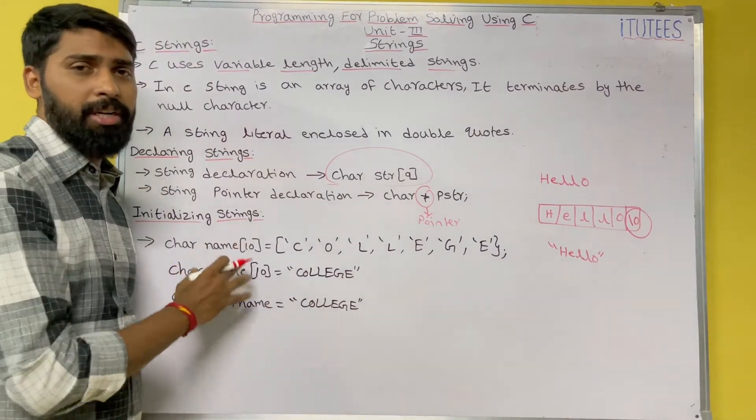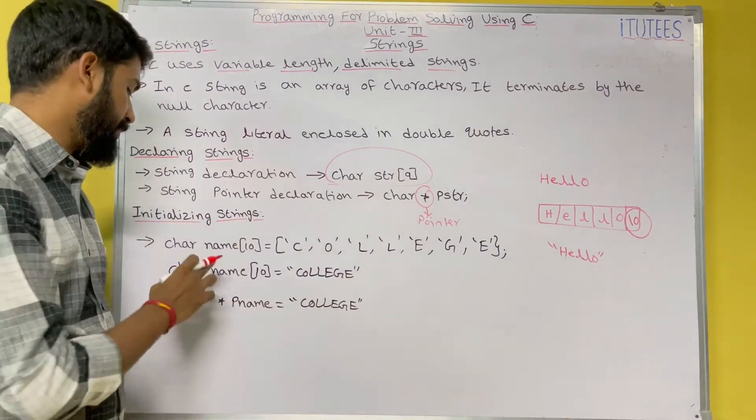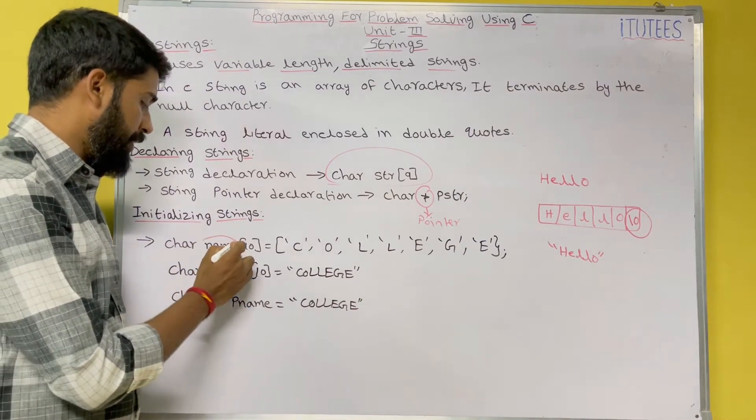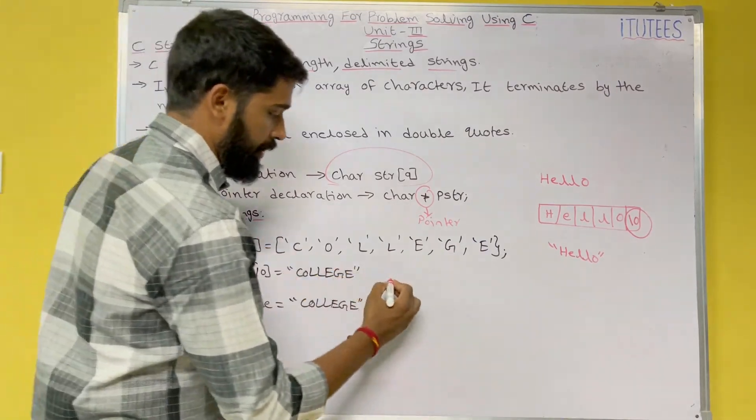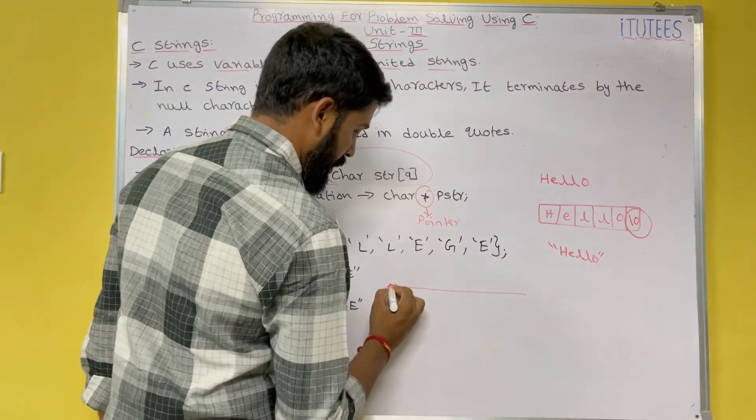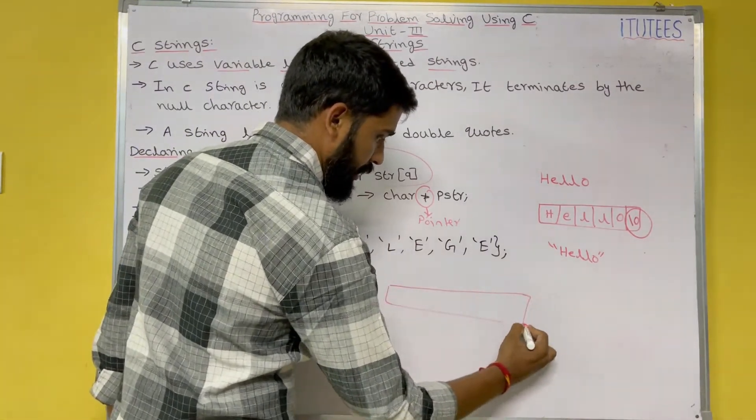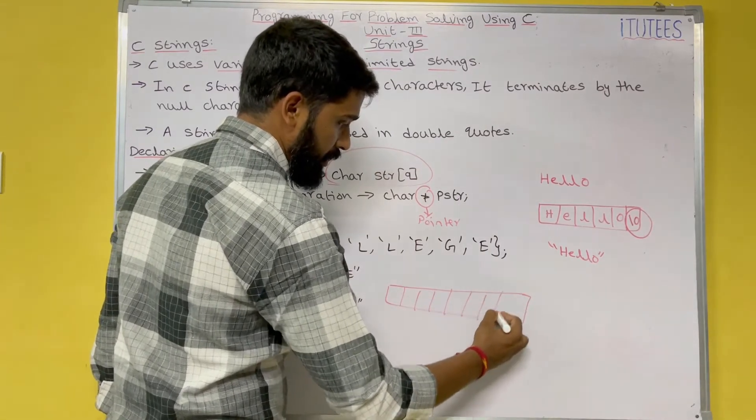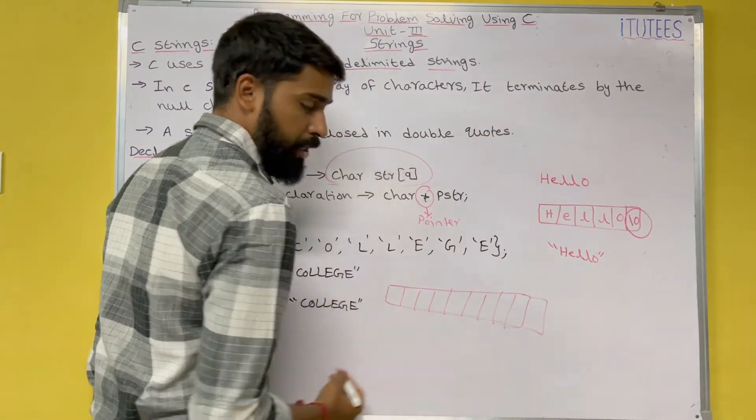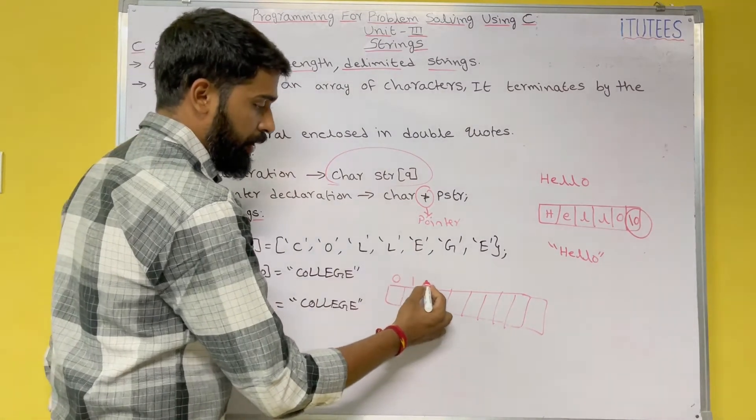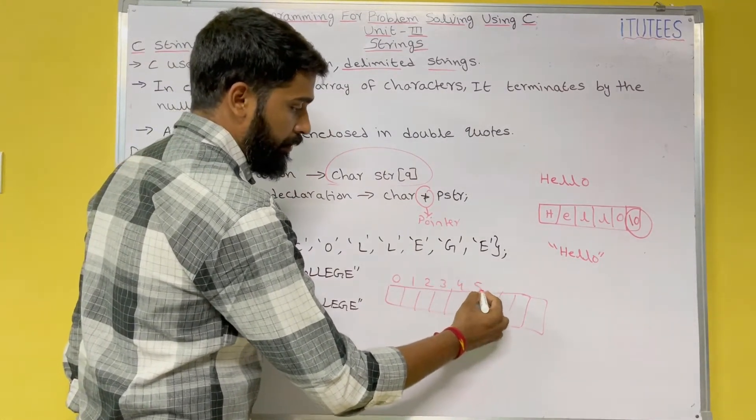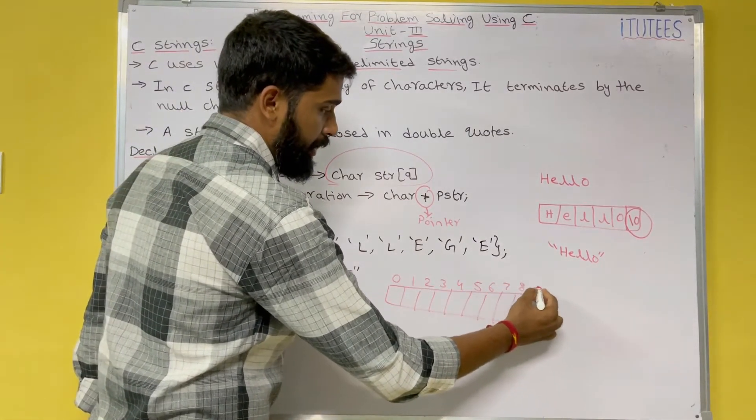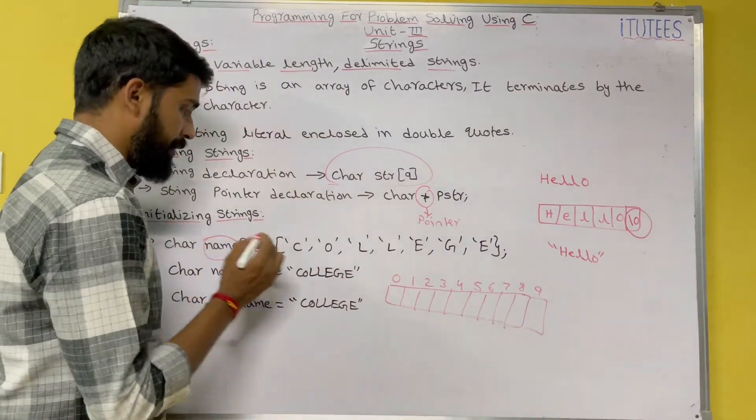So coming to initialization of the strings. So here, I am taking a variable name. The size of the array is 10. [Indices 1, 2, 3, 4, 5, 6, 7, 8, 9, 10. Index is 0, 1, 2, 3, 4, 5, 6, 7, 8, 9.] And the array name is name.